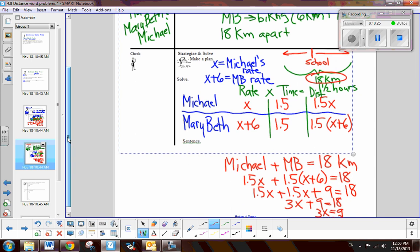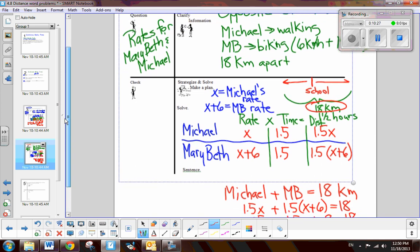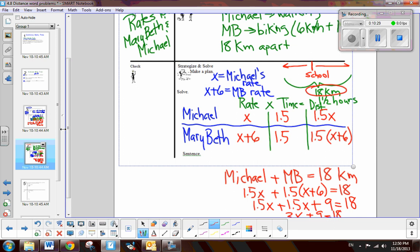So, the rates. So, X represents Michael. So, Michael was traveling at a rate, Michael was traveling 3 kilometers per hour. And Mary Beth was traveling 9 kilometers per hour. That'd be a little fast. Very good.